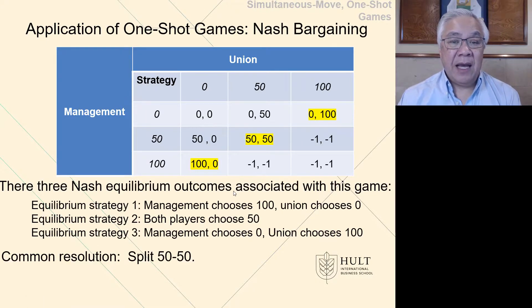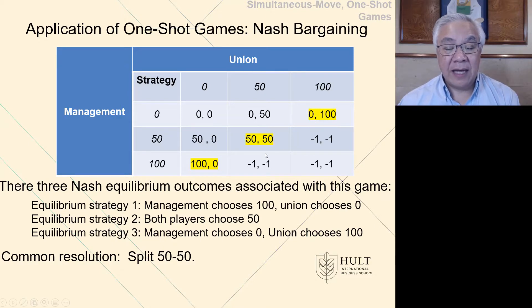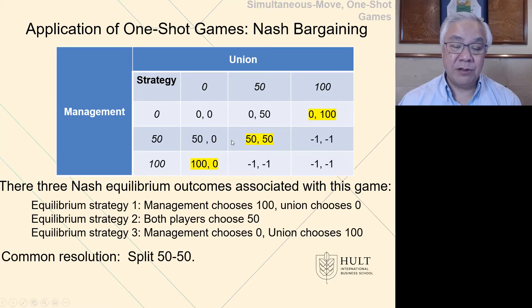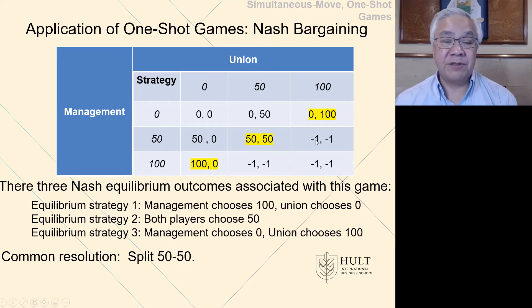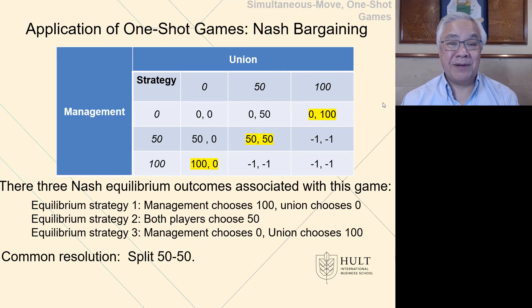In this case, we have three equilibria. The common solution, as you know, is to go 50-50. At that point, all $100 is used, and management cannot improve its position by going to $0 or $100. Likewise, the union gets $50 and would lose if they go to $0 or $100. So we have three equilibria, but as a practical matter, we know what's going to happen — 50-50.